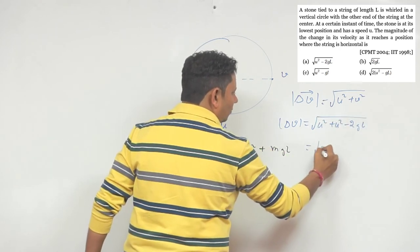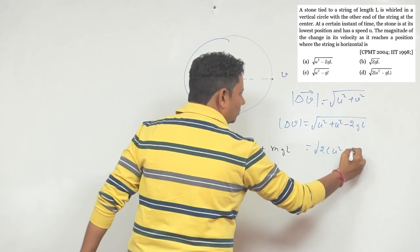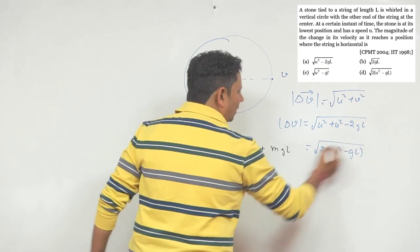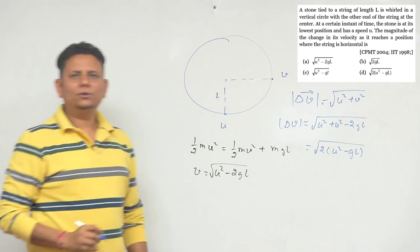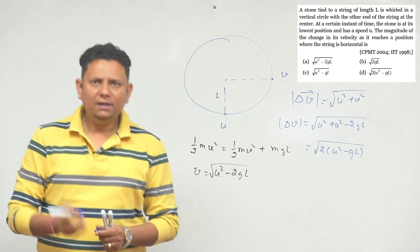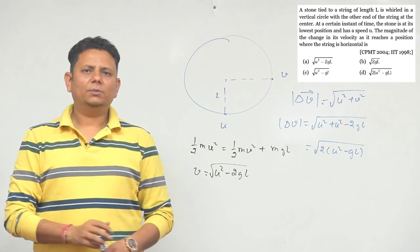This will be equal to under root 2U squared minus 2gL. This is your delta V magnitude. Hence, option number D will be the right answer. D is the correct choice.